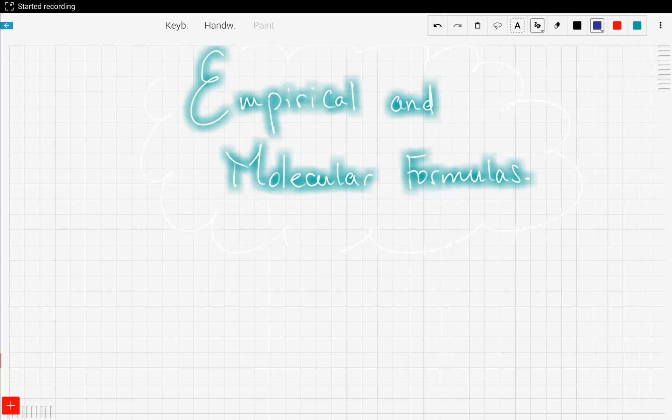Now let's talk about empirical and molecular formulas. In chemistry we have two types of formulas: empirical formulas, denoted by EF for simplicity, and molecular formulas. Empirical formulas are simplified formulas of compounds.